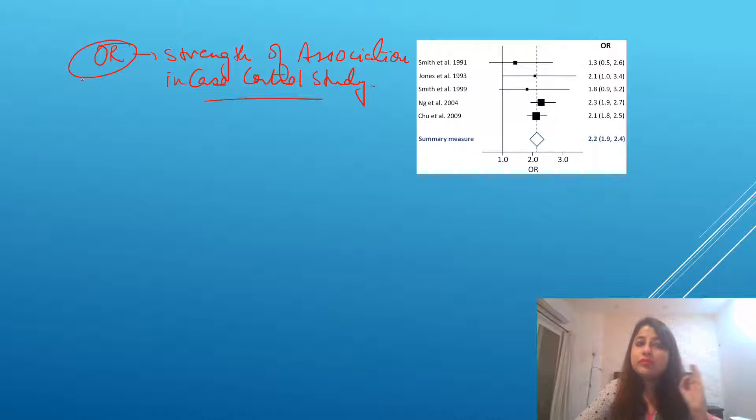Now, what values can odds ratio take up? It could be more than one. It could be equal to one, or it could be less than one. Is it okay?